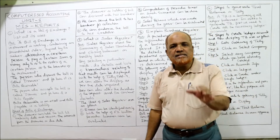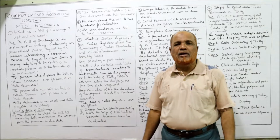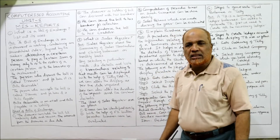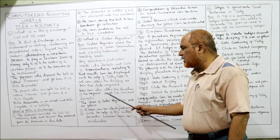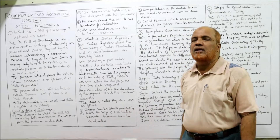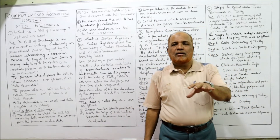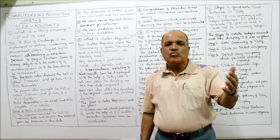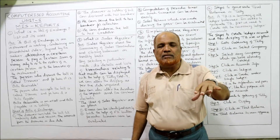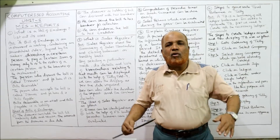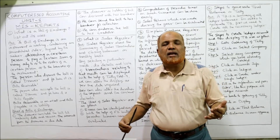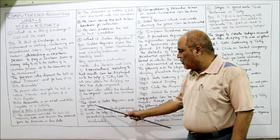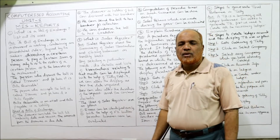The sales register can be altered and configured as per the data required. It has different options available; we can configure it to get whatever data we require. The user can also alter the duration of the report — some businesses want details every 15 days, some every month, some every two months — and configure accordingly.